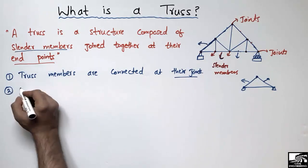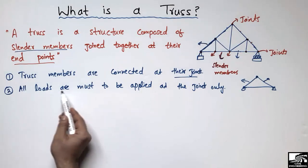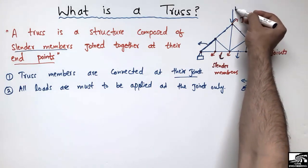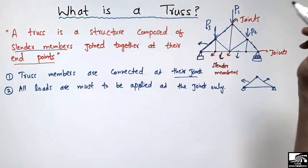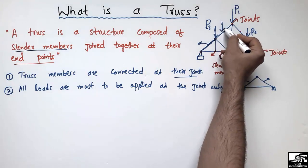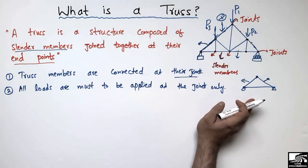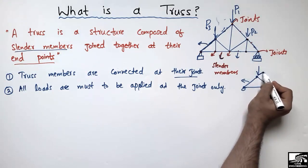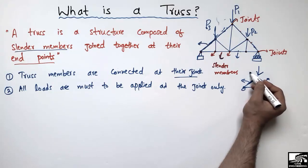The second important point states that all loads must be applied at the joints only. For example, loads P1, P2, and P3 should always act at the joints of a truss structure. A load should not be applied at the middle of a member — that would be the wrong way of analyzing the truss structure.